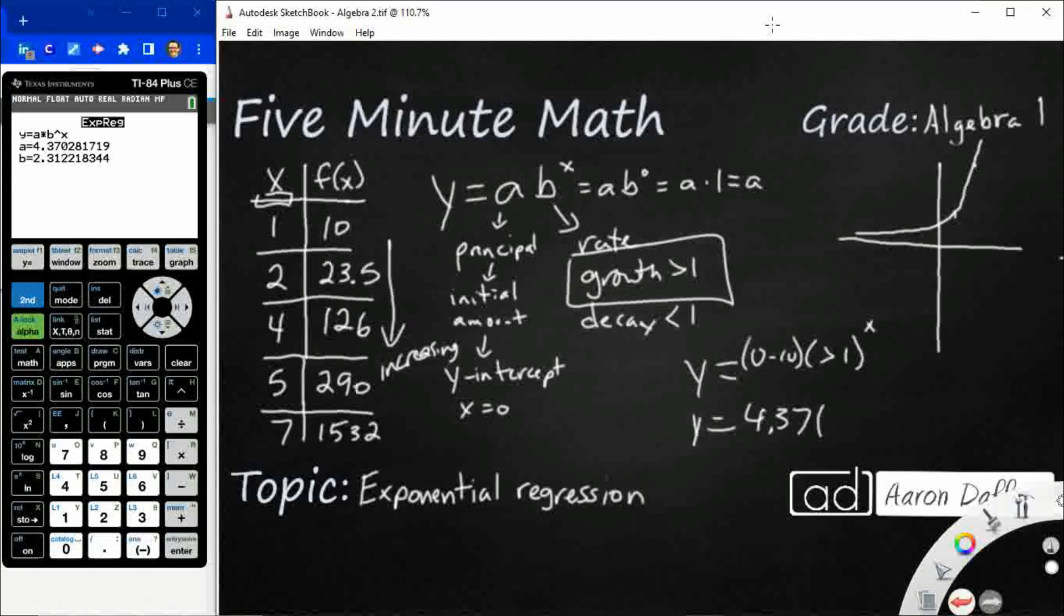They say it's going to be, let's round it to the hundredths, 2.31 to the x. So there we go. That is an exponential function that we could use to show this data. And if we were to punch it in to the calculator, we could see a graph similar to this.